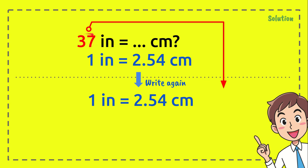Now we want to make it equal for both sides of the equal sign. We want to put 37 here and 37 here. So, 37 times 1 equals 37 inches, and 2.54 centimeters times 37 equals the answer.